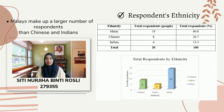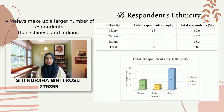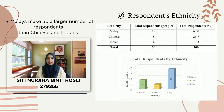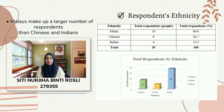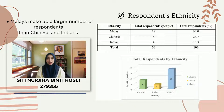The figure shows the ethnicity of respondents, which includes Malay, Chinese, and Indian. Malay respondents contribute 18 of the 30 total respondents. Chinese respondents were 8 people, and there were 4 Indian respondents. Malay respondents make up the largest group, while Indian respondents were fewer than Chinese respondents.